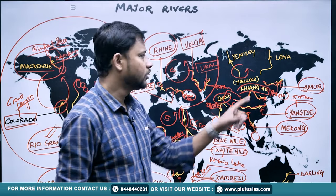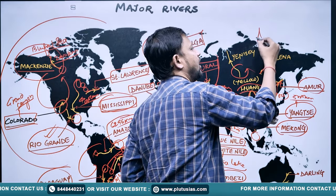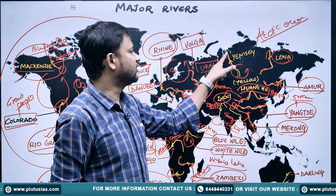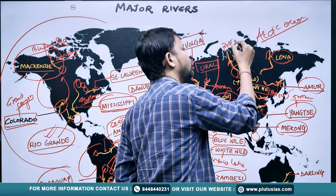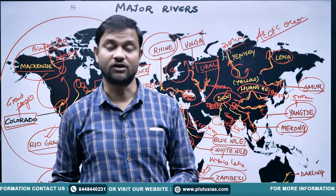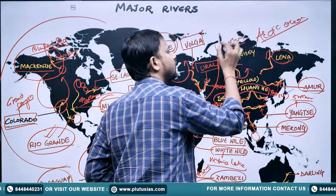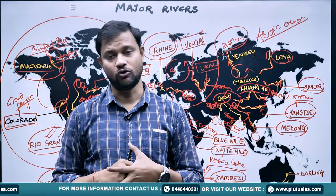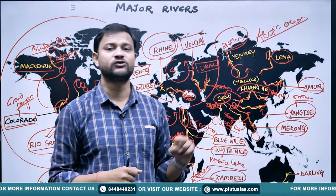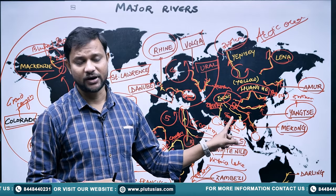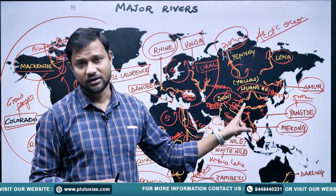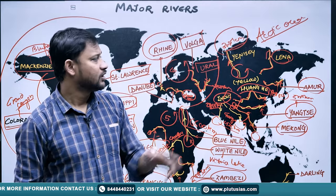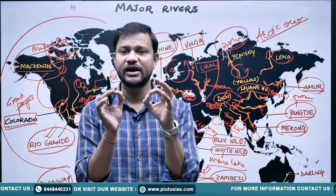The Lena River drains into the Arctic Ocean. The Yenisei River has a length of almost 3,000 kilometers and also drains into the Arctic Ocean. So the major rivers of Asia are: Indus, Ganga, Brahmaputra, Mekong, Yangtze, Yellow River (Yango), Amur, Lena, and Yenisei — forming the major drainage systems of Asia.